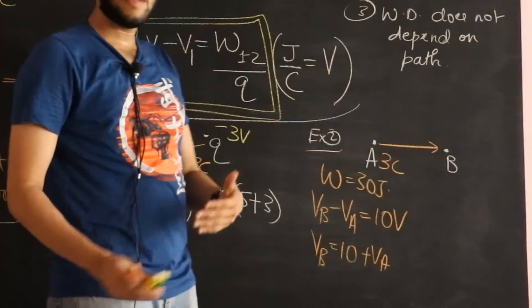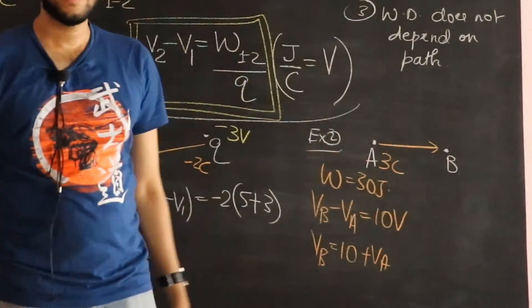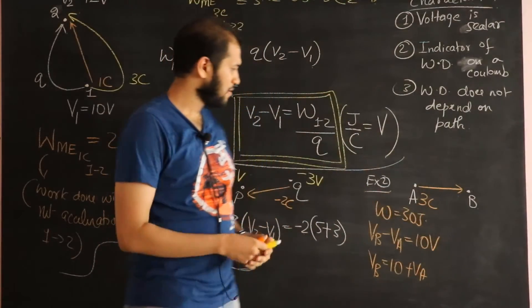So if you could tell me what VA is, I could tell you what VB is. Or if you could tell me what VB is, I could tell you what VA is. But nothing is given. So what could be the answer?